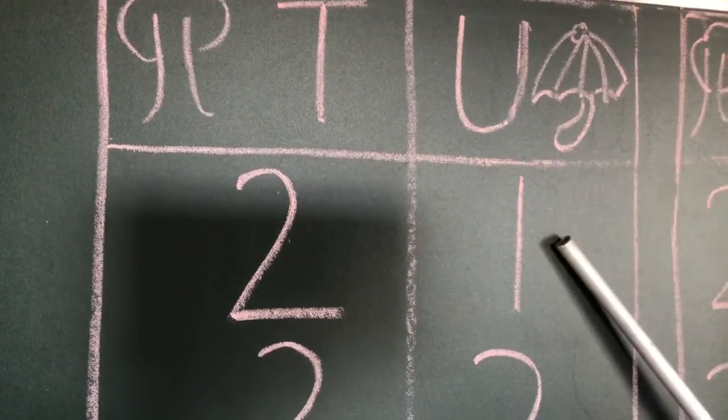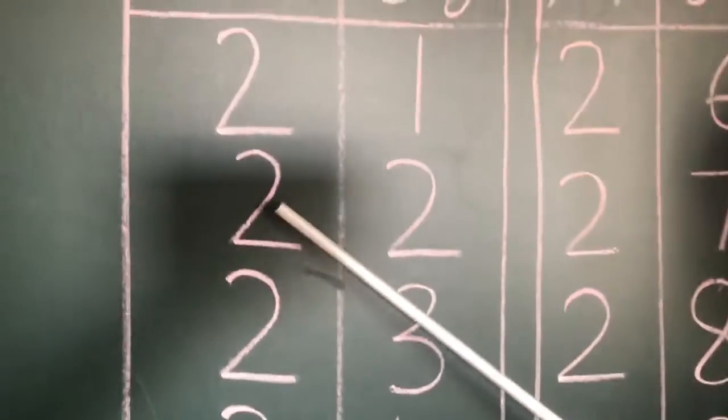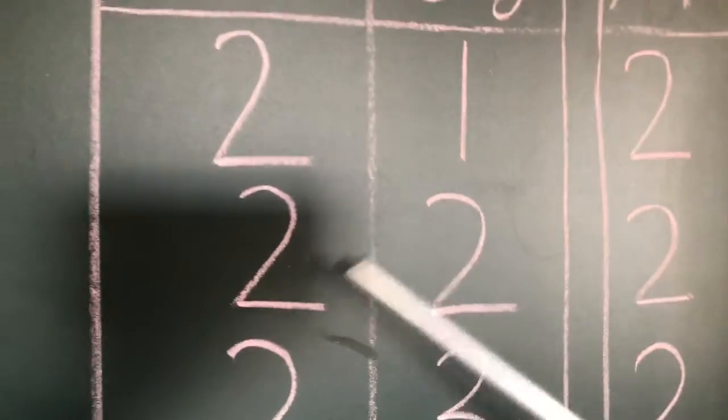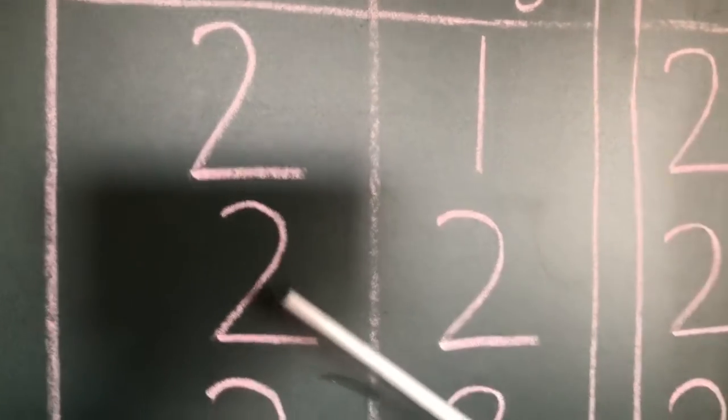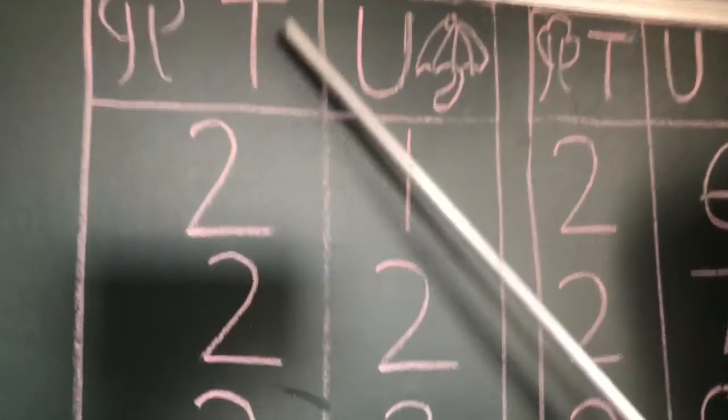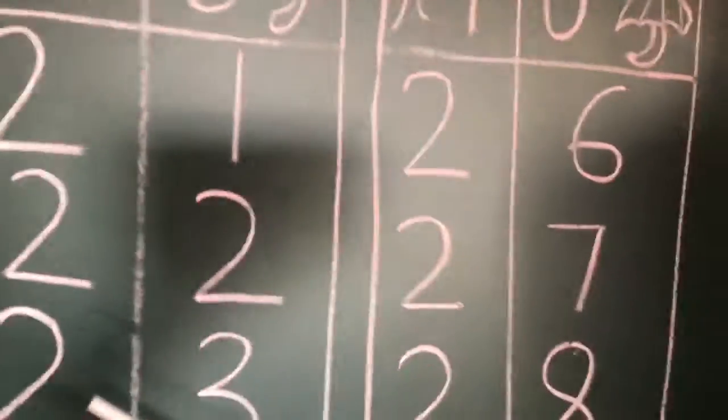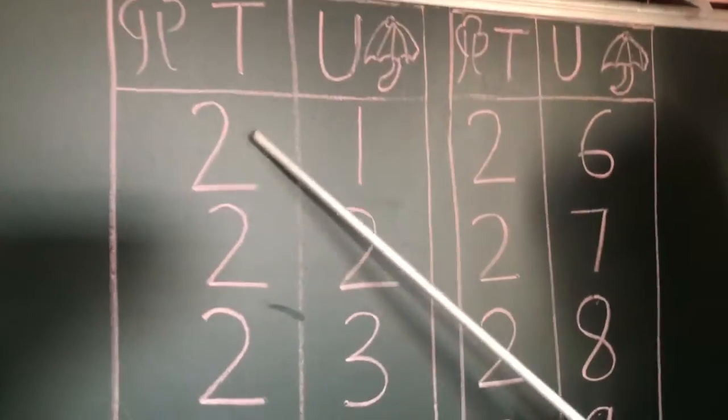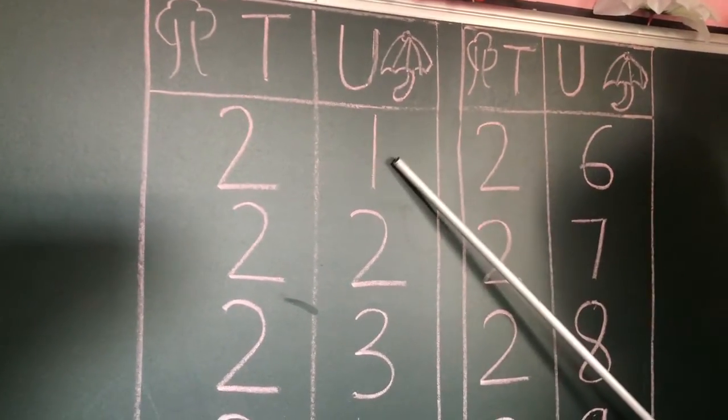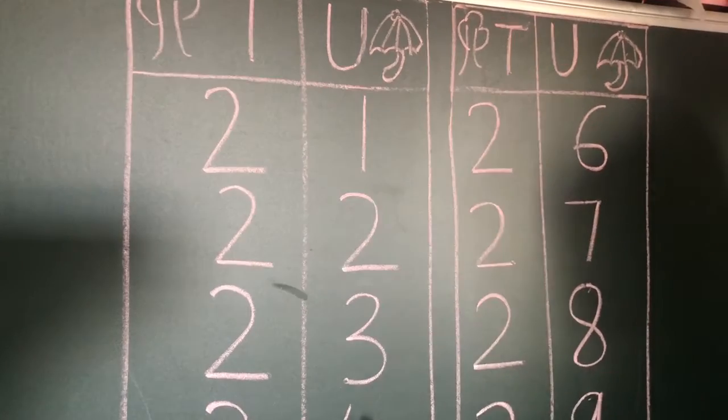You have to continue. This is 22. Again, this 2 is in the unit place. This is 22, it will come in the tens place and 2 will come in the unit place. Same way, 23. 2 is coming and we are just shuffling, just writing these numbers here.